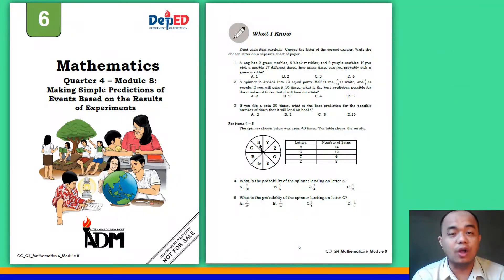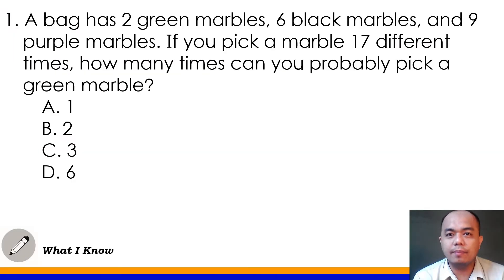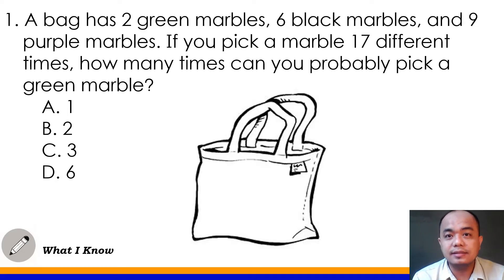Let's discuss first the What I Know part of your module. Let's have number 1. A bag has 2 green marbles, 6 black marbles and 9 purple marbles. If you pick a marble 17 different times, how many times can you pick a green marble? So, we have here a bag class.